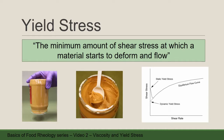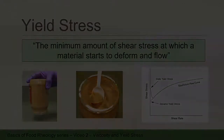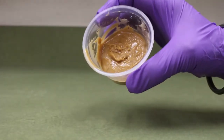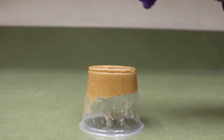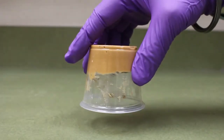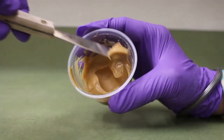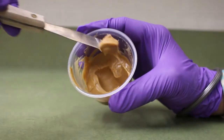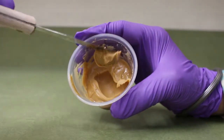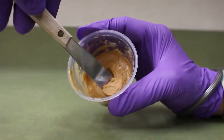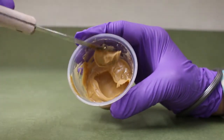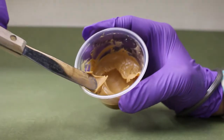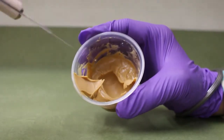Peanut butter is a very good example for yield stress. Now observe this video. Peanut butter does not flow even at the bottom of the cup. But when we use the knife to take it out, it comes out because peanut butter has yield stress. Putting the knife in to take the peanut butter out means we apply the yield stress, and it still sticks to the knife until we apply stress again.